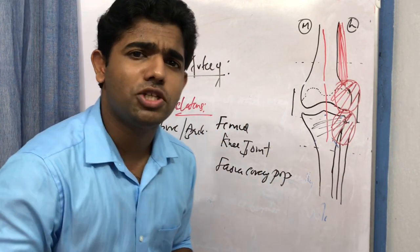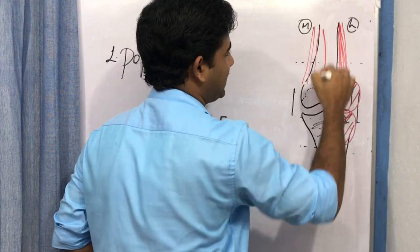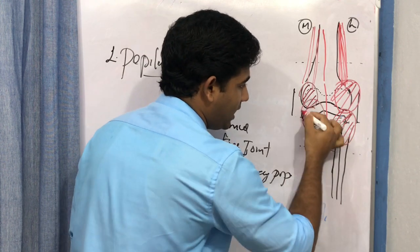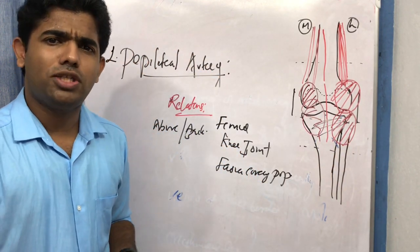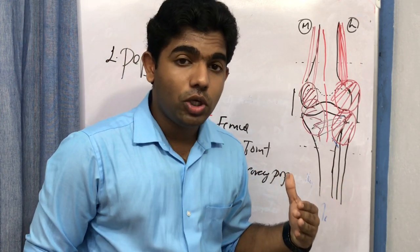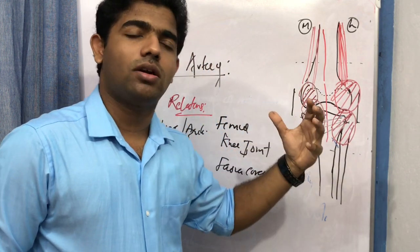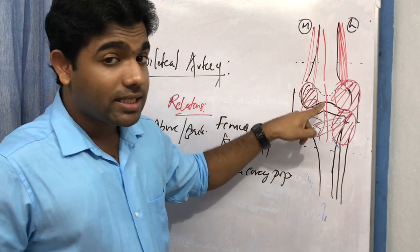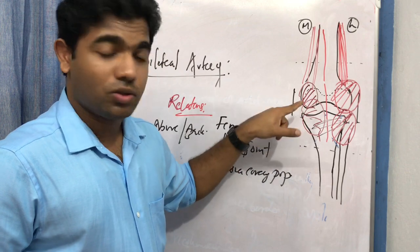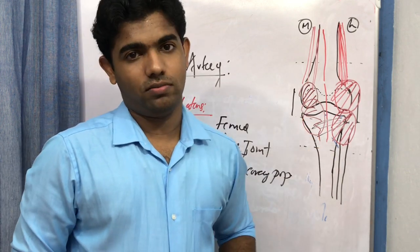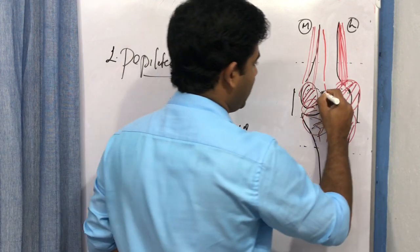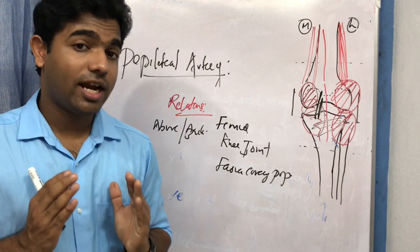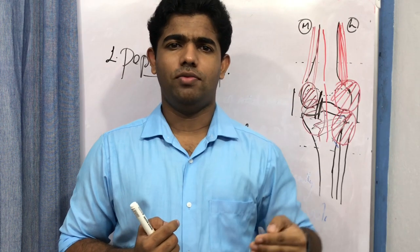For the medial relationships: you have semitendinosus and semimembranosus, then the medial femoral condyle, and the medial head of the gastrocnemius. Additionally, the tibial nerve and popliteal vein are also related to the popliteal artery. Just study the relationships one by one and they become straightforward.